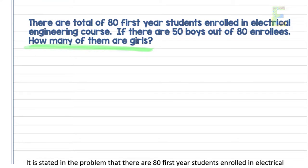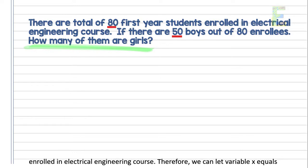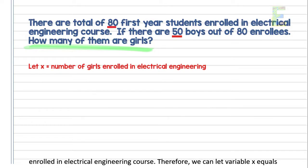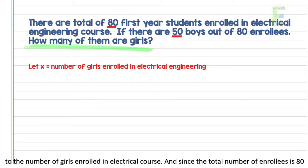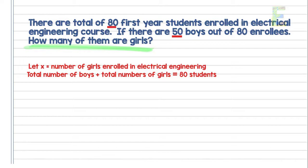It is stated in the problem that there are 80 first-year students enrolled in electrical engineering, and 50 of them are boys. The problem is asking for the number of girls enrolled. Therefore, we can let variable x equal the number of girls enrolled, and since the total number of enrollees is 80, we can conclude that the total number of boys plus total number of girls equals 80 students. This will be our equation.